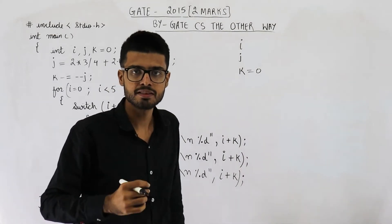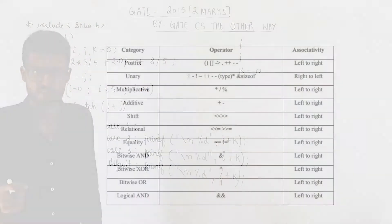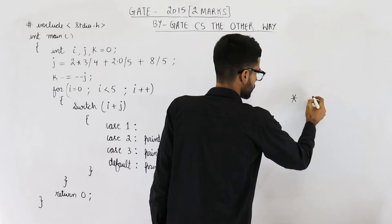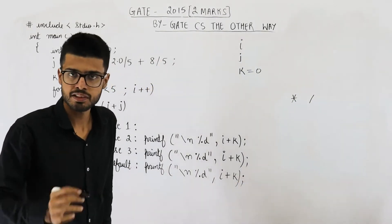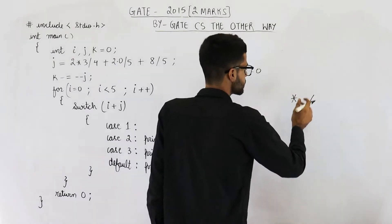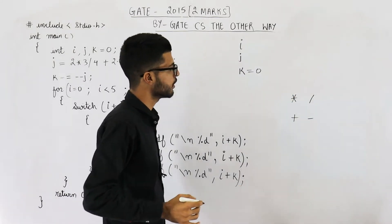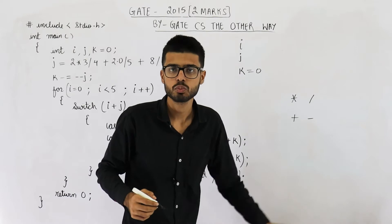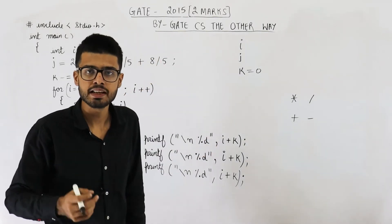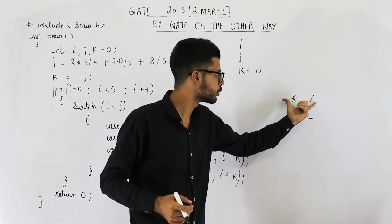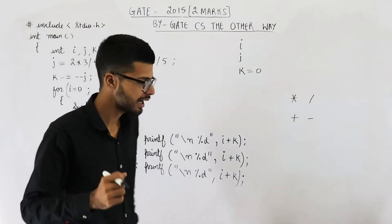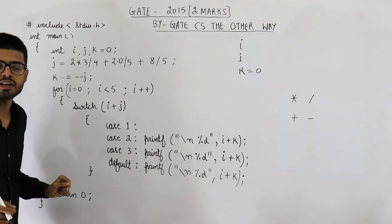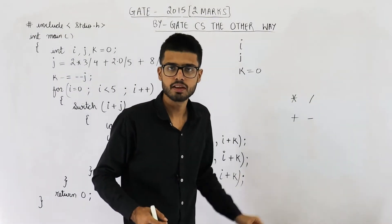I'll display an image. You can see that the precedence of star and divide — that means multiply and divide — is higher than plus or minus. Both of these operators have the same precedence, but their precedence is higher than plus and minus. Because both have the same precedence, we check associativity. The associativity of both operators is left to right, meaning scan the expression from left to right and whenever you see either operator, solve it there.